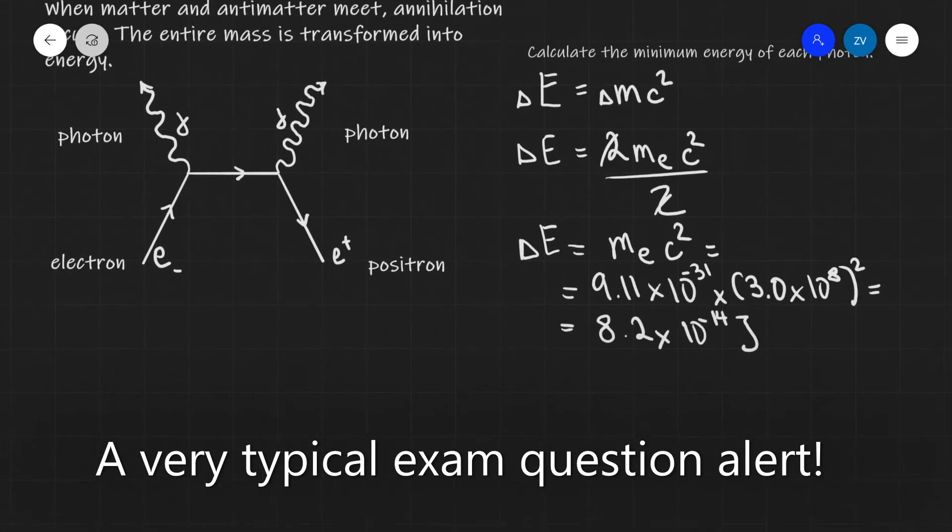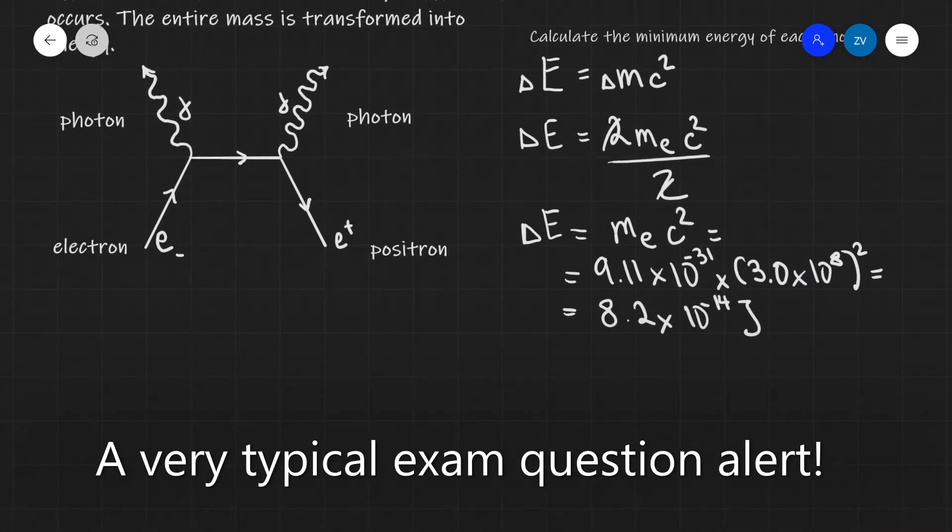And this will be the minimum energy of each photon. We could also convert that to electron volts, which is quite a typical number. And the way we are going to do that, let's actually convert it to mega electron volts, will be by dividing by the electron charge.